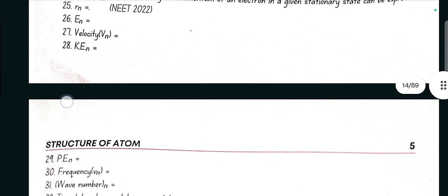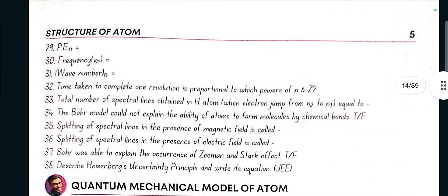Potential energy is equal to double of kinetic energy, which is 4.36 into 10 raised to the power minus 18 z square upon n square. Frequency mu n equals 3.29 into 10 raised to the power 15, 1 upon n1 square minus 1 upon n2 square into z square.